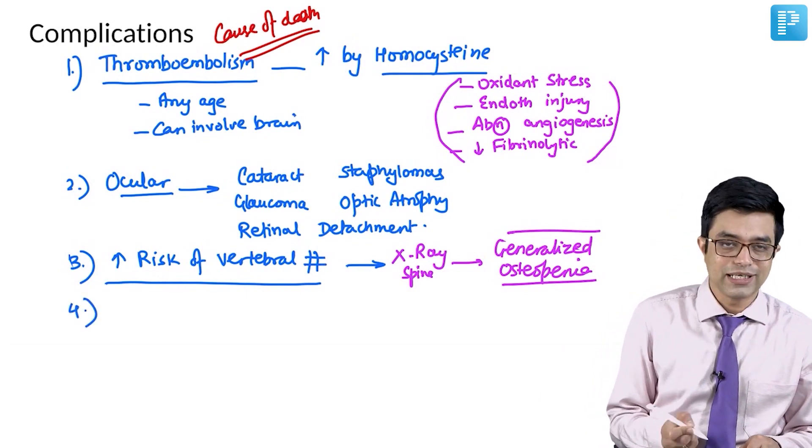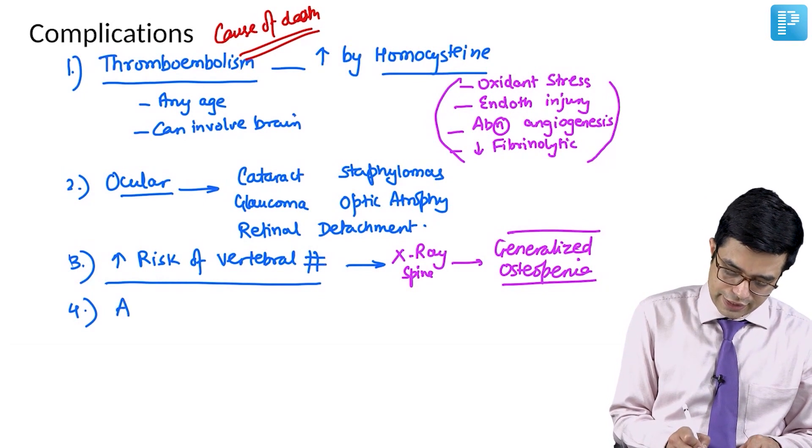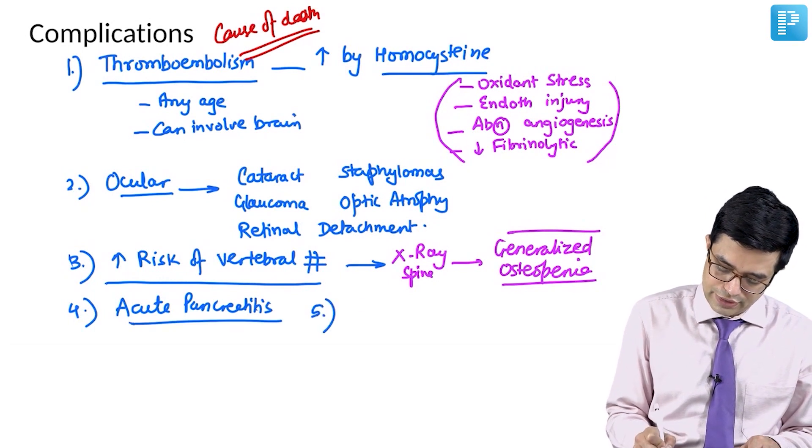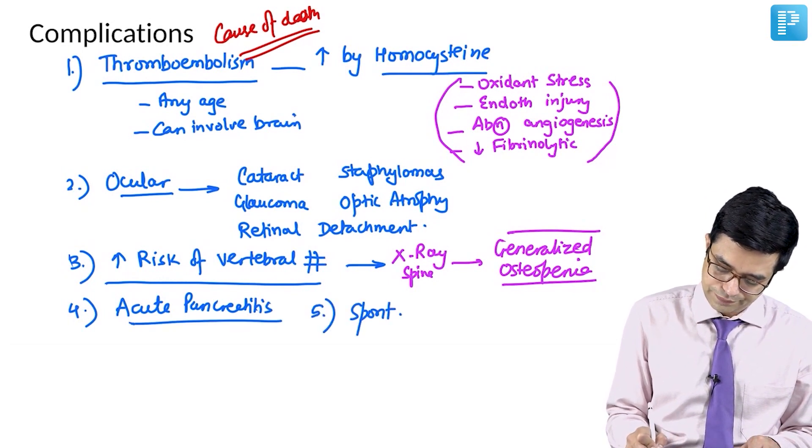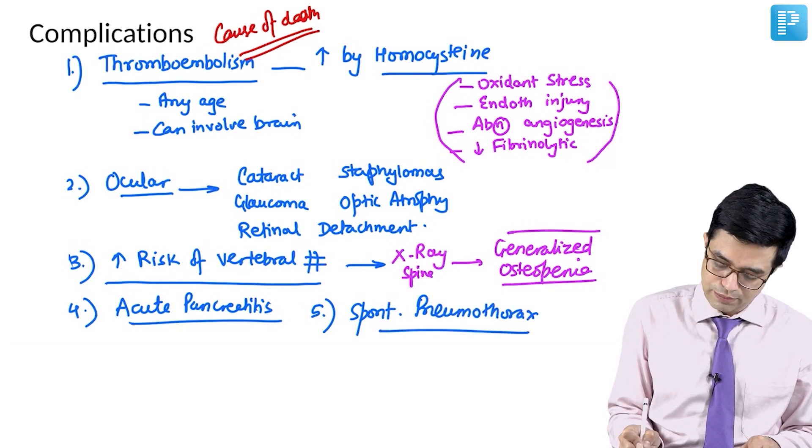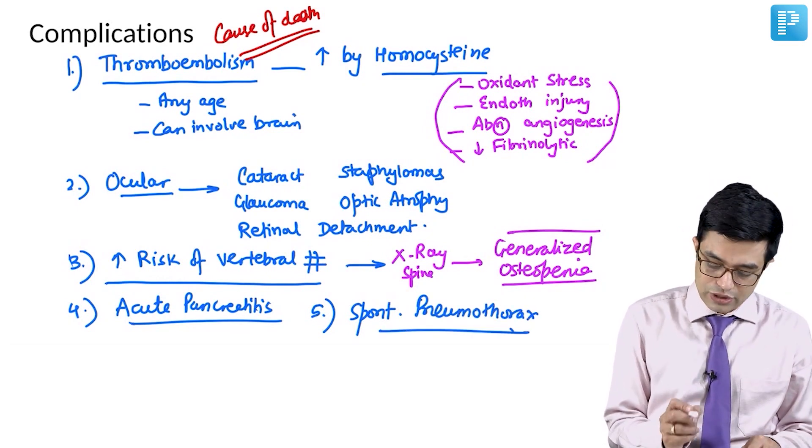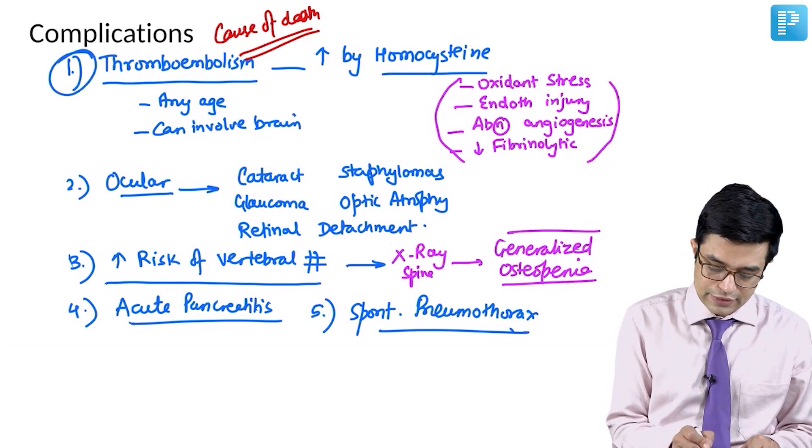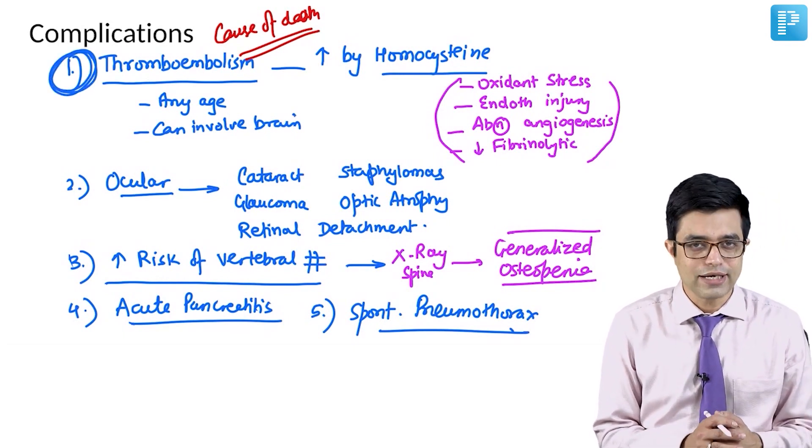And fourthly, you may have other rare complications like acute pancreatitis and spontaneous pneumothorax. These are the other complications which can happen. But the most important one that you need to remember is thromboembolism, which is the major cause of morbidity and mortality.